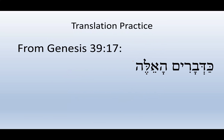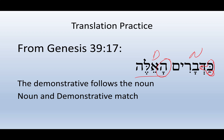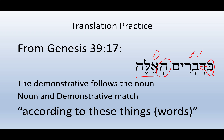Translation practice. We have: Ka-devarim ha-eleh — 'according to the words of these,' or 'according to these words.' The ka preposition means 'as' or 'like.' Because of the patach and dagesh, it also contains the article. The demonstrative follows the noun; both are definite — they match in gender, number, and definiteness. So 'according to these words' or 'according to these things,' since Devarim can also mean 'things.'